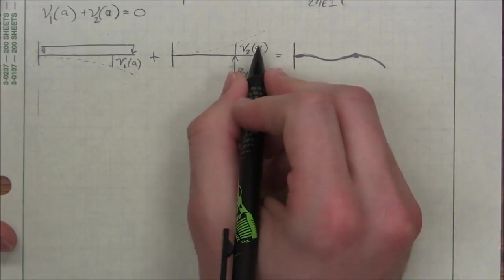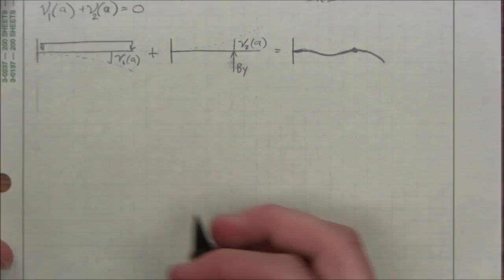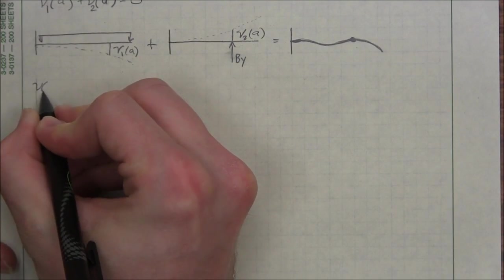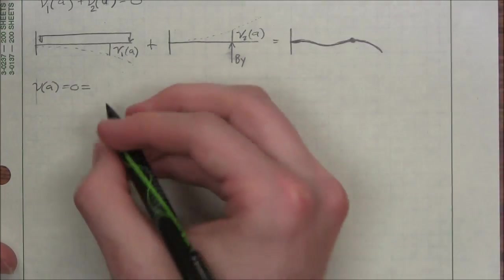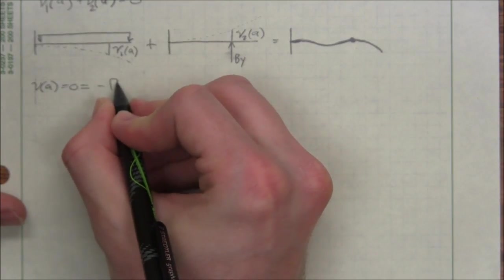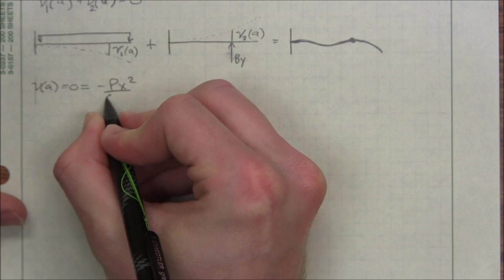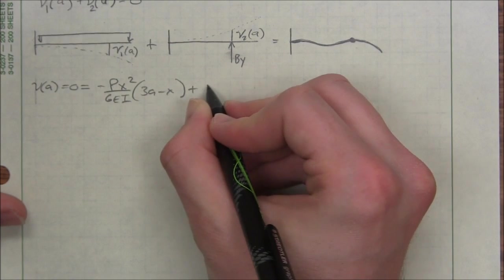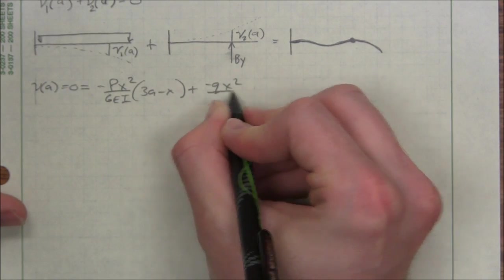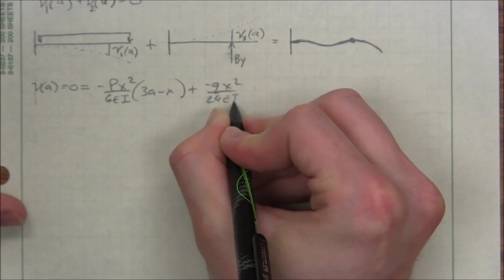remember that's not shear. That's a common misconception. This is deflection that we're adding together. So my total deflection at A, which equals 0, equals the sum of these two equations. Negative P X squared, 6EI, 3A minus X, plus a negative Q X squared, 24EI, 6L squared minus 4LX plus X squared.